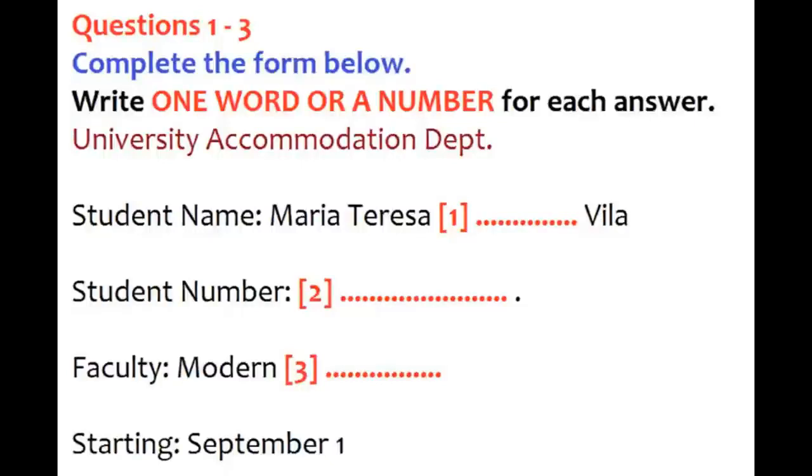First of all, can you give me your name and student number so that I can find you on the system? Sure. My name is Maria Teresa Gonzalez. Maria Teresa Gonzalez. How do you spell that? G-O-N-Z-A-L-E-Z. Thank you. Got it. And your student number, please. S-H-U-3-0-0-7-1-5-P-G. Ah, here you are. Department of Modern Languages. Yes, that's me.